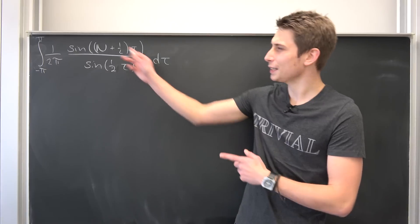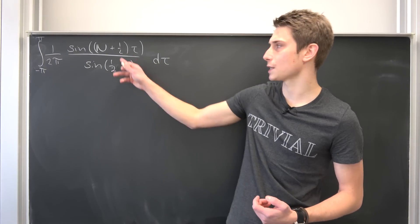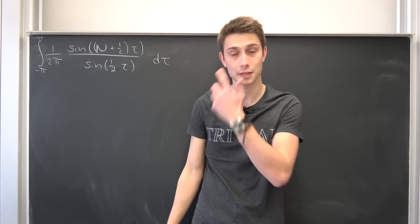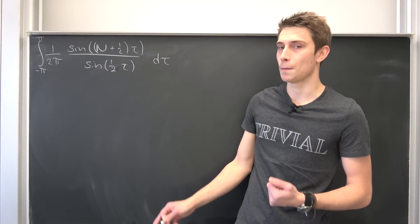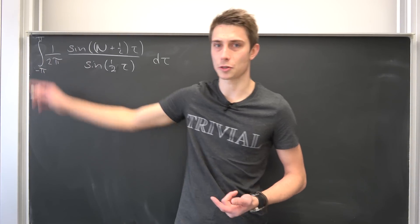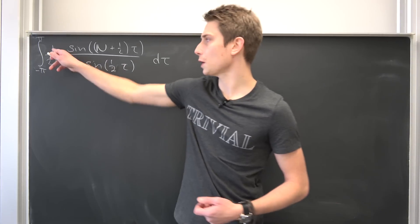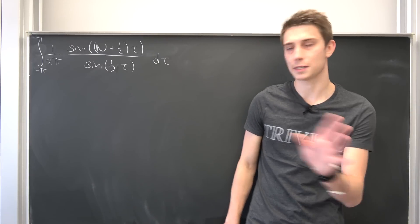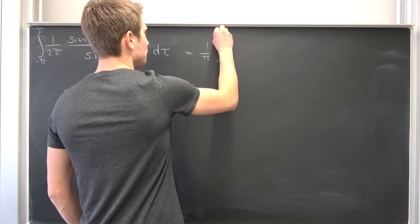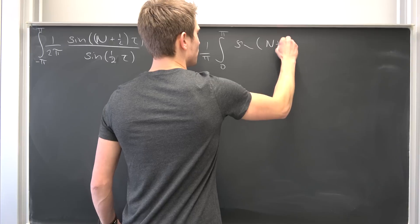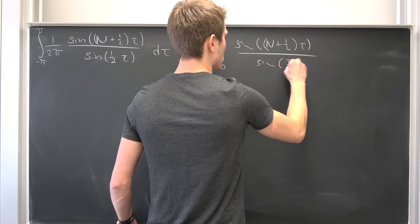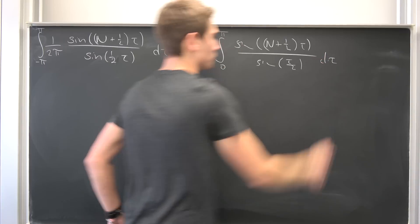First, notice that this is actually an even integral, because sine is an odd function — odd over odd gives an even function. An even function over a symmetric integral lets us rewrite this as 2 times the integral from 0 to π. The 2 and the 2 cancel, giving us 1/π times the integral from 0 to π of sine((n + 1/2)τ) over sine(τ/2) dτ.